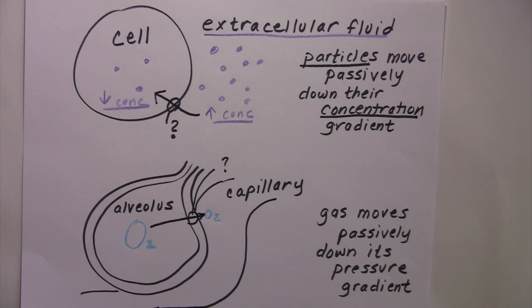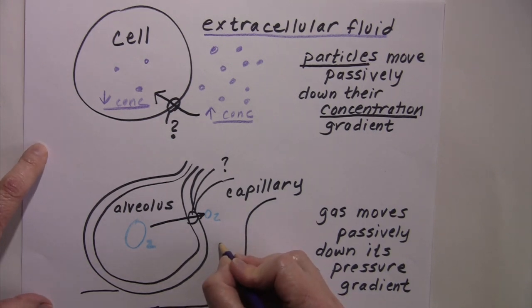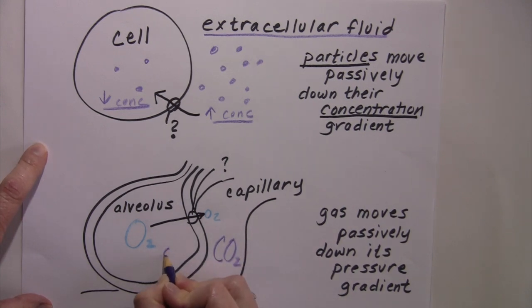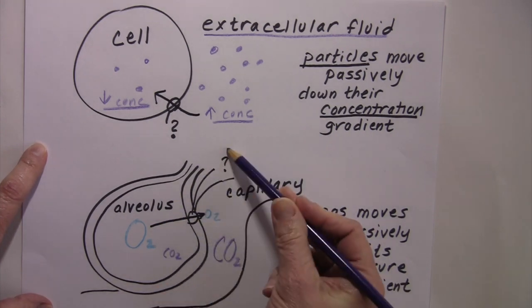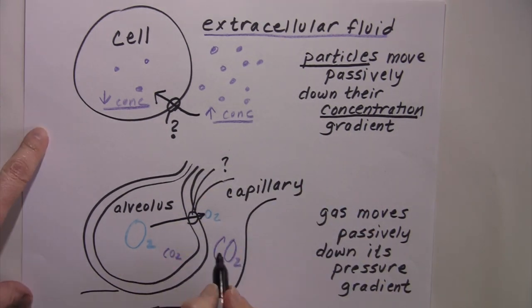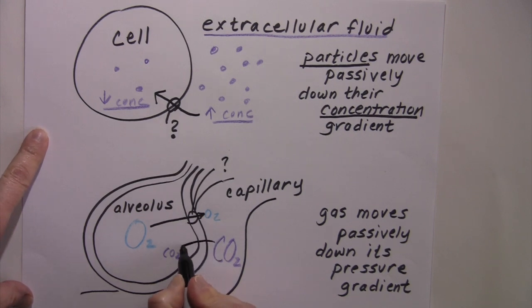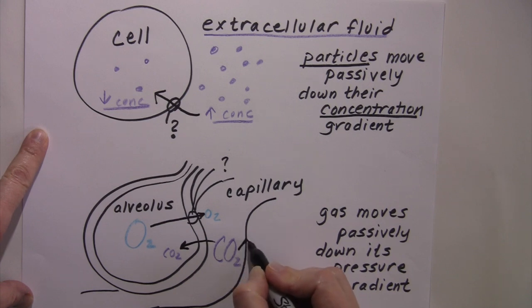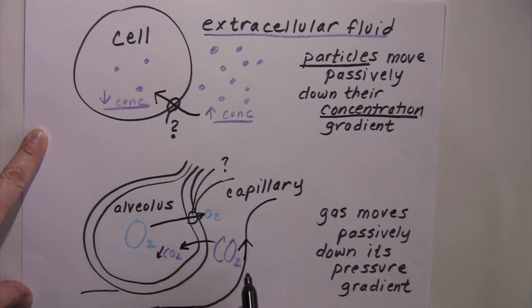Or if we look at another example, if carbon dioxide was at a higher pressure in the blood than in the alveolus, which is what we expect because we keep exhaling and keep that CO2 level down, then CO2 will passively move from its area of high pressure into its area of lower pressure.